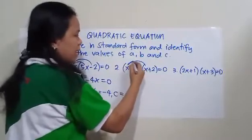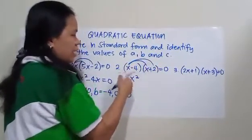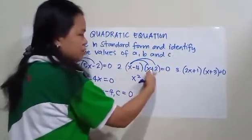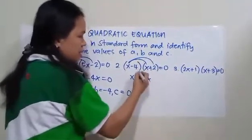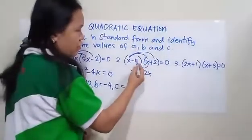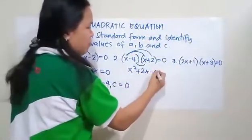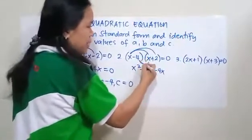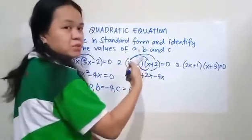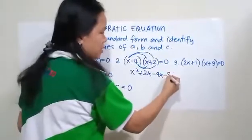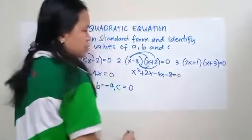Multiply the outer terms. x times 2 is positive 2x. Multiply the inner terms. So negative 4 times x is negative 4x. And then multiply the last terms. So negative 4 times 2 is negative 8 equals 0.